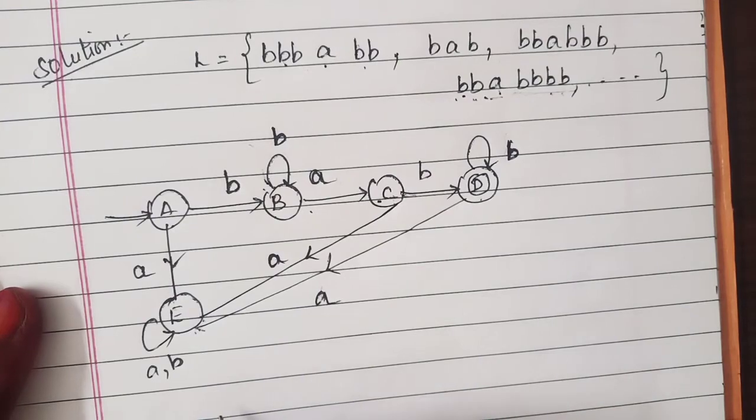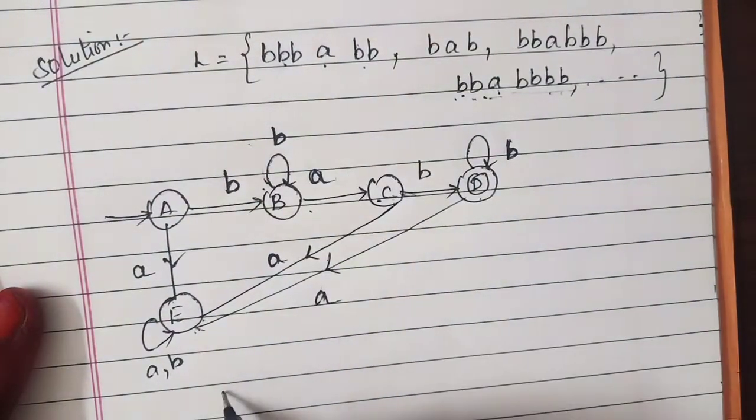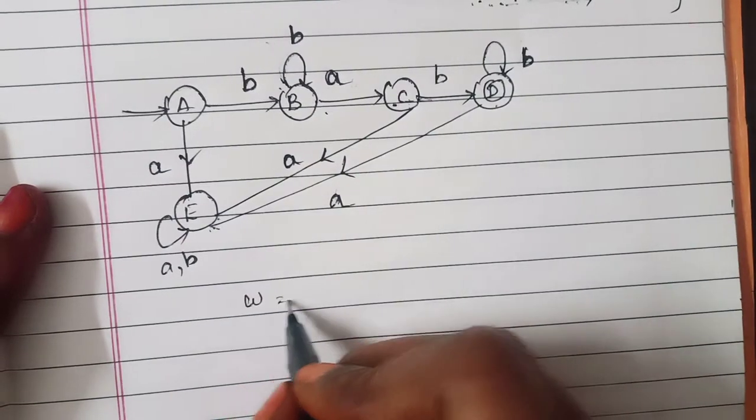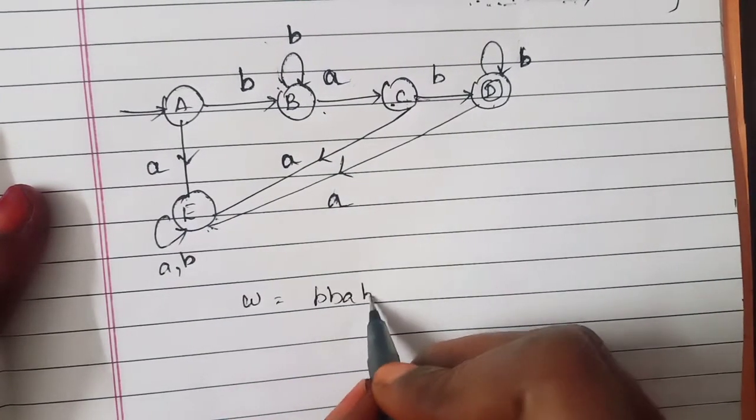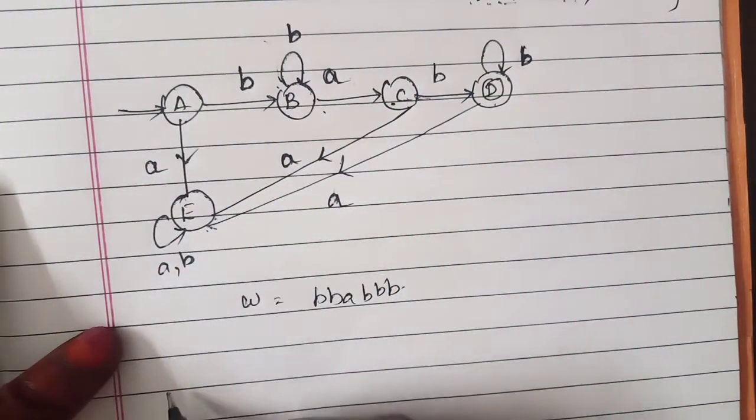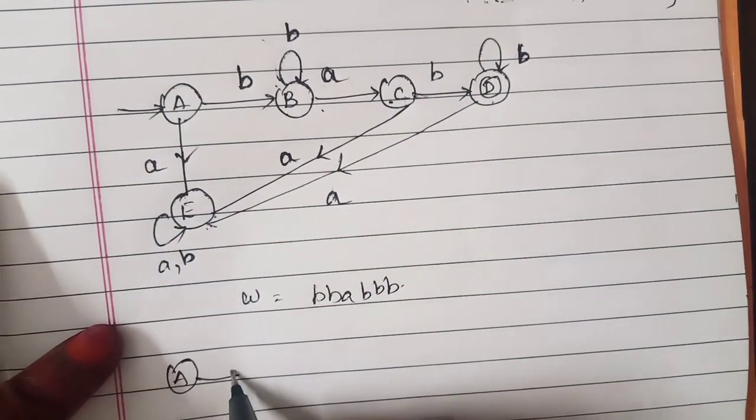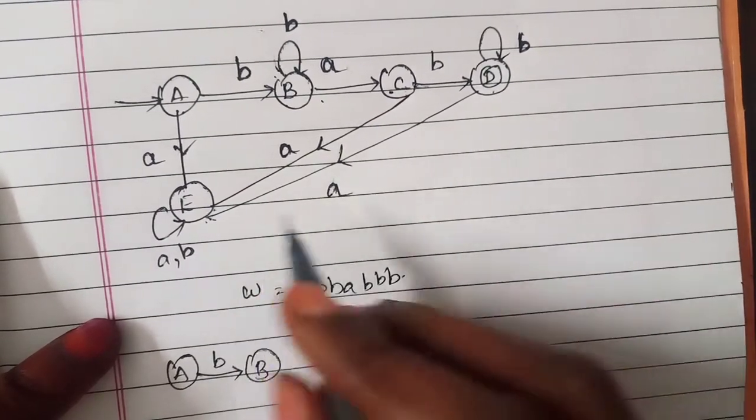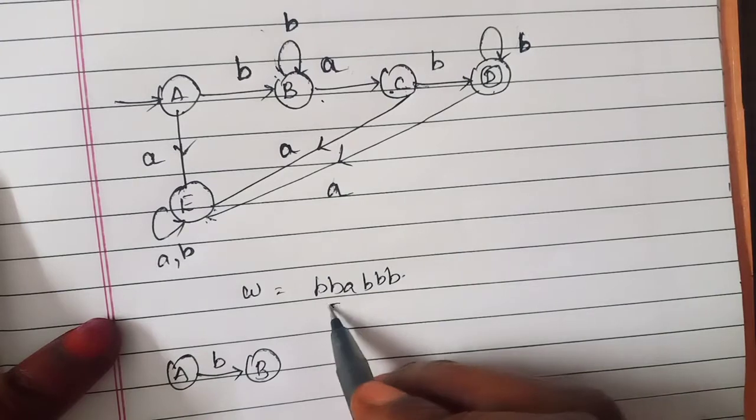So we'll check any one of the string by using this. Say w equal to b b a b b. It starts from A when you give input to b it goes to B and again it gets an input b and it goes to B itself.